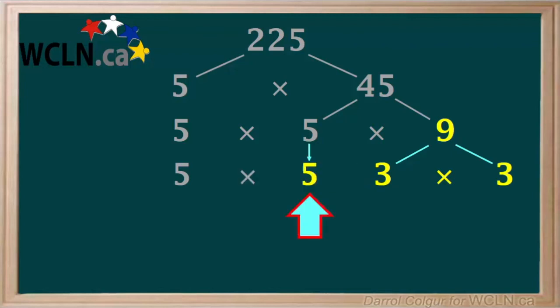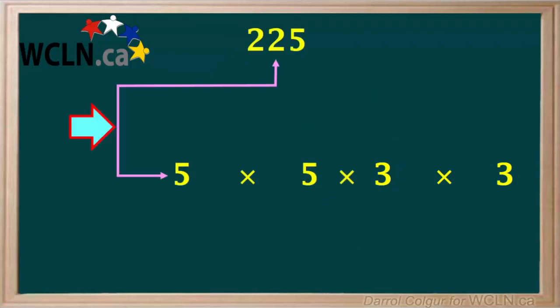We'll also bring this 5 down here, and write a multiplication sign here. This shows us that 225 is 5 times 5 times 3 times 3. Just take a few seconds and check this out for yourself.